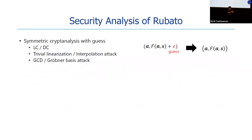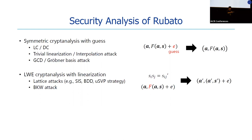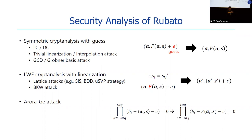Here we briefly introduce the security analysis of Rubato. For symmetric-key cryptanalysis, we guess the Gaussian noise and apply the usual symmetric-key cryptanalysis. For linear and differential cryptanalysis, it cannot be used with guessing-determined attacks, so we compute linear and differential probability without Gaussian noise. For LWE cryptanalysis, we linearize all monomials and do a lattice attack or BKW attack for the linearized lattice, considering both sieves and enumerations for the SVP oracle. For the ARORA-GE attack, we replace the dot product with a polynomial.